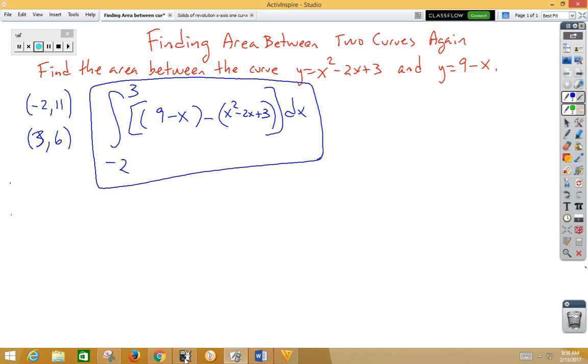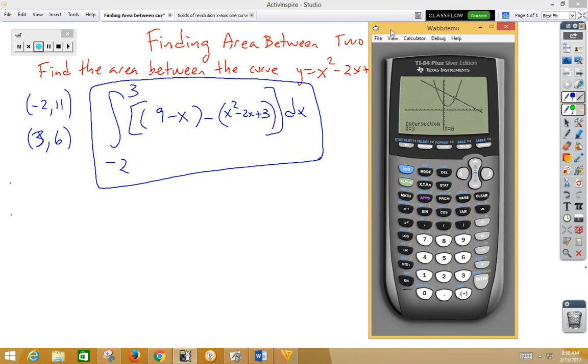So now let's go ahead and go to math 9. Let's get out of our graph and do math 9. Our bottom bound is negative 2. Our top bound is positive 3. First function, 9 minus x. Notice it gets its own set of parentheses. Minus second function, also gets its own set of parentheses: x squared minus 2x plus 3. Close that parentheses, go over and put in your dx. And you get 20.83333333. That looks somewhat familiar. I'm going to see if that isn't a fraction. Math 1. And it is 125 over 6.